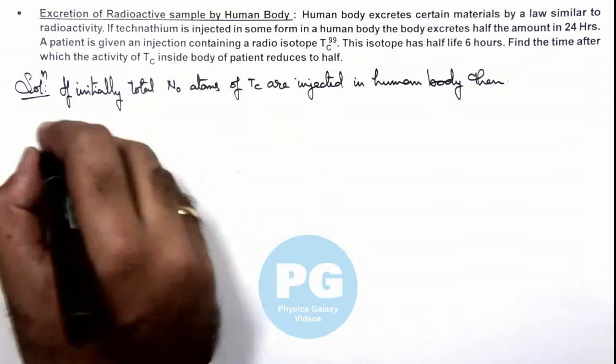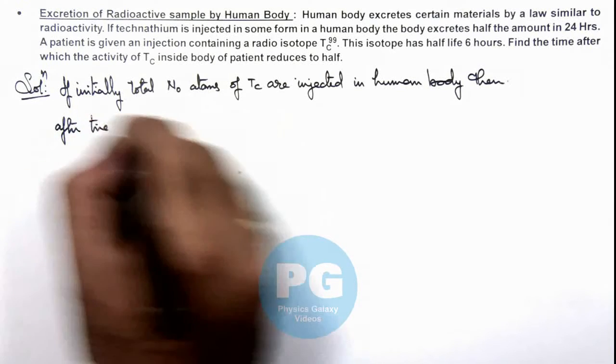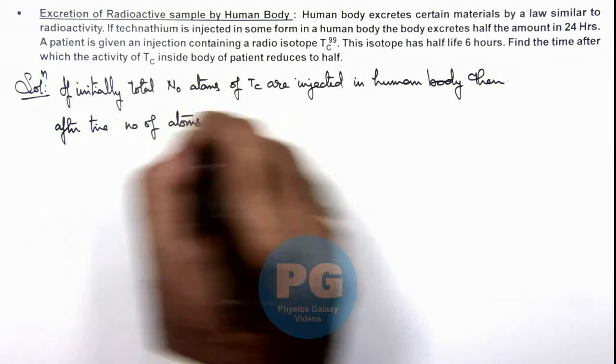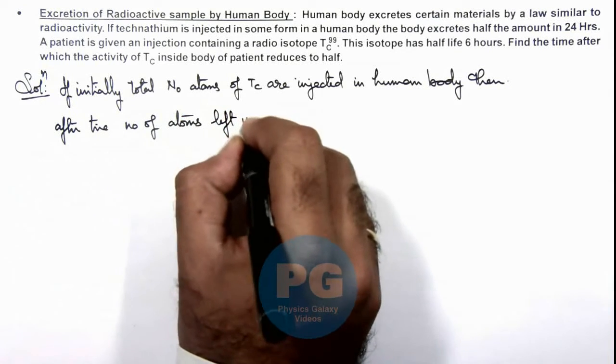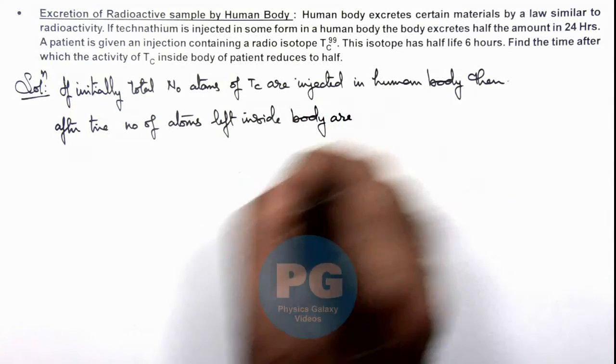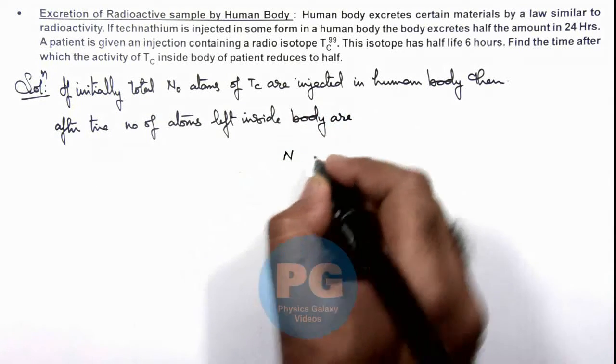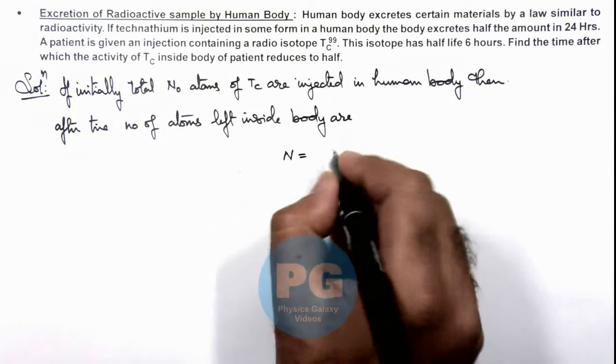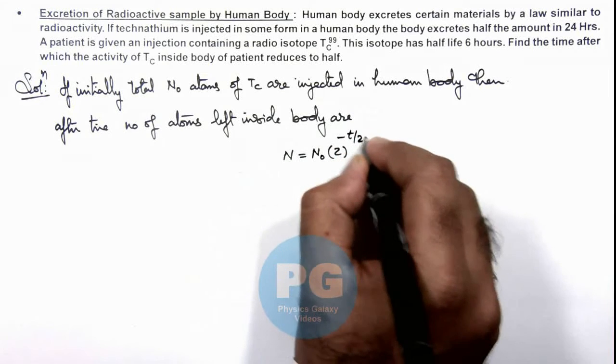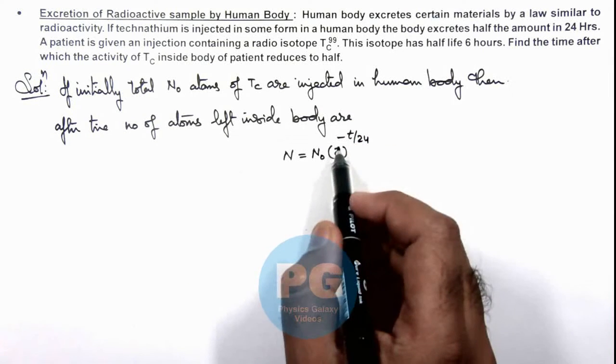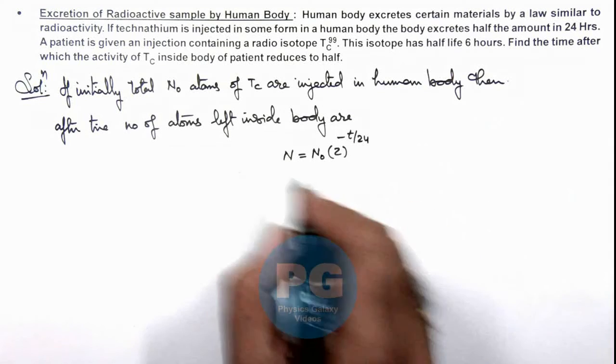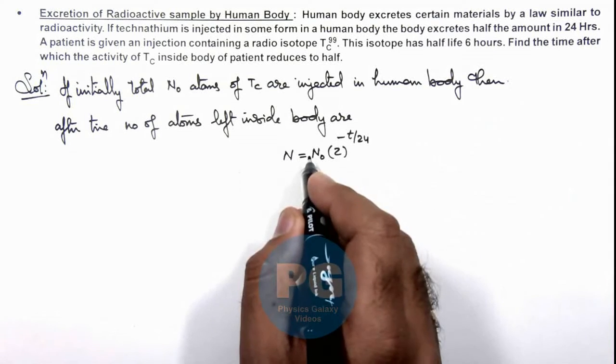Then after time t, number of atoms left inside body are: these number of atoms can be given by the radioactive decay law that will be N = N₀ × 2^(-t/24). Here we are taking the half-life to be 24 hours, and N are the total number of atoms inside the human body.